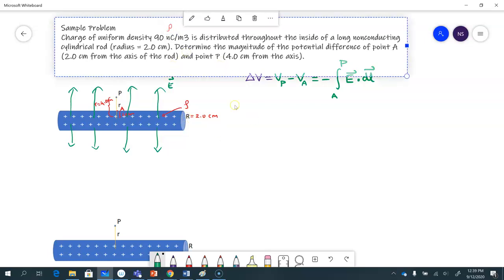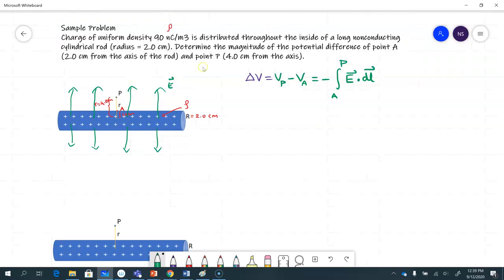And then they've given us a point P, which is 4 centimeters away from the axis. And they want us to calculate the magnitude of the potential difference of point A and point P. So A is a point on the surface, that's 2 centimeters from the axis, and P is 4 centimeters from the axis.